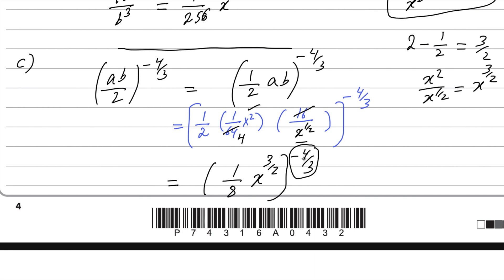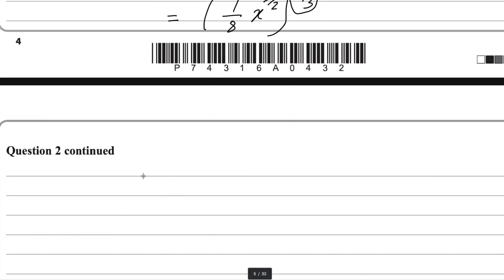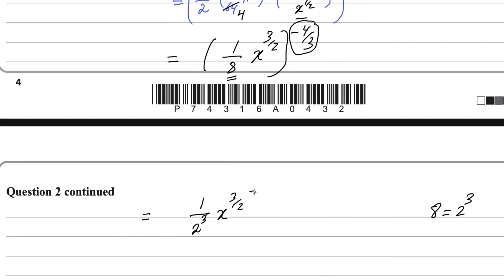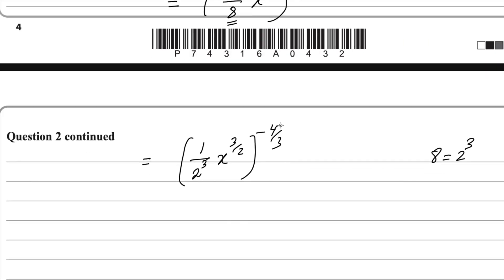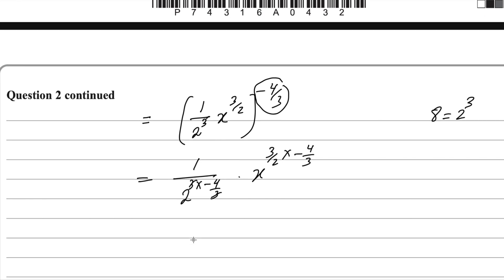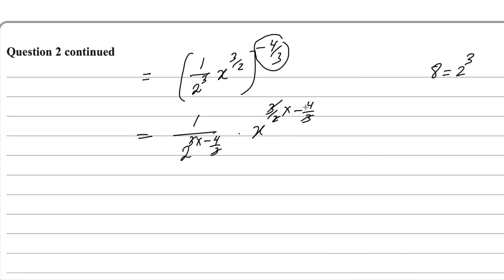Now the outer power becomes the power of each factor inside. For the 1/8: 8 can be written as 2 cubed, so the denominator is 2^3 raised to minus 4 over 3, and for x: x^(3/2) raised to minus 4 over 3. Applying power to power: 3 × (−4/3) gives −4 for the 2, and (3/2) × (−4/3) — the 3s cancel and the 2s cancel — giving −2 for x.